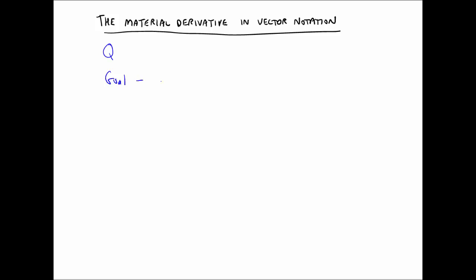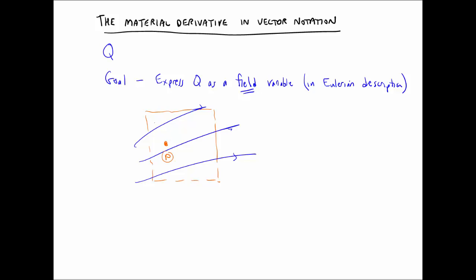Our goal here is to express Q as a field variable in the Eulerian description. So what we want to do is consider some region in the flow in which there is a flow flowing through and consider some point, and I'm going to call it point P, so just some point in the flow, and at that point we have quantity Q. Now in the Eulerian method, or Eulerian description, we just sit there and watch how Q changes, how Q varies in space and in time. So if we move to some other point, we would see how Q changes. Also, Q may change with time.